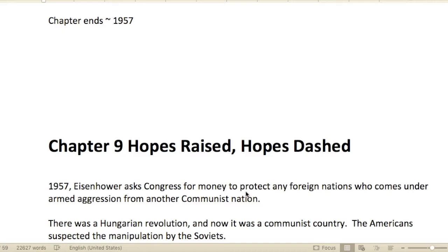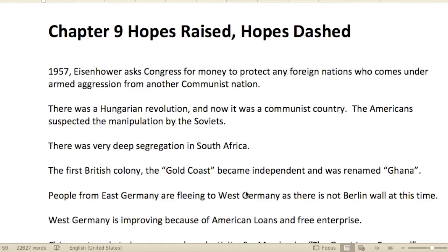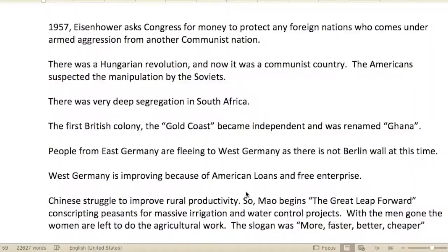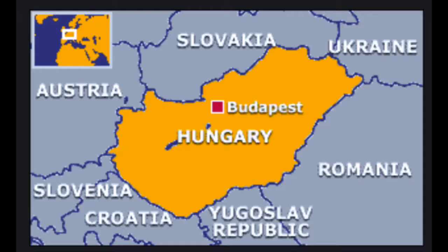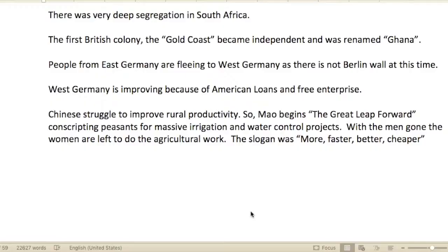Chapter 9: Hopes Raised, Hopes Dashed. In 1957, Eisenhower asked Congress for money to protect any foreign nation that comes under armed aggression from another communist nation. There was a Hungarian Revolution — Hungary was a communist country at that point. The Americans suspected manipulation by the Soviets. There was very deep segregation in South Africa. The first British colony, the Gold Coast, became independent and was renamed Ghana.